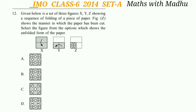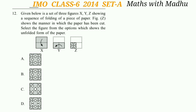Question 12: Given below is a set of three figures X, Y, Z showing a sequence of folding of a piece of paper. Figure Z shows the manner in which the paper has been cut. Select the figure which shows the unfolded form of the paper. The correct figure showing the unfolded form is option B.